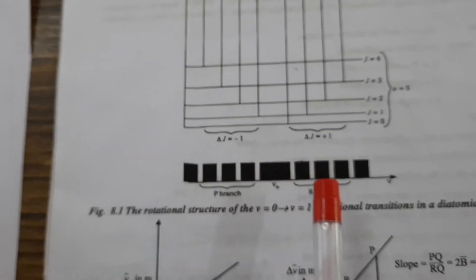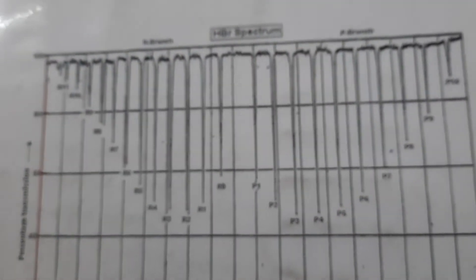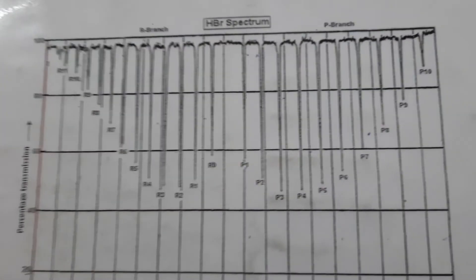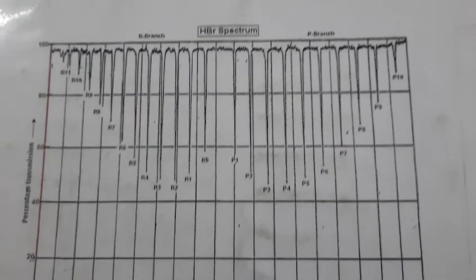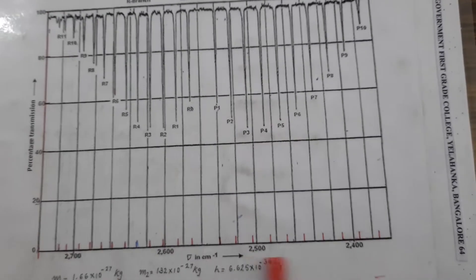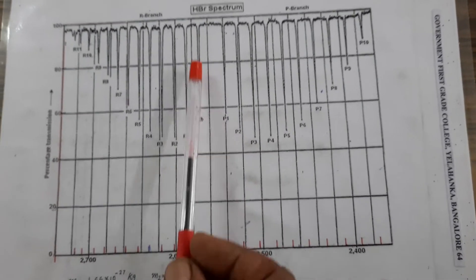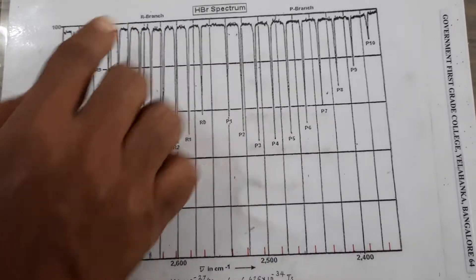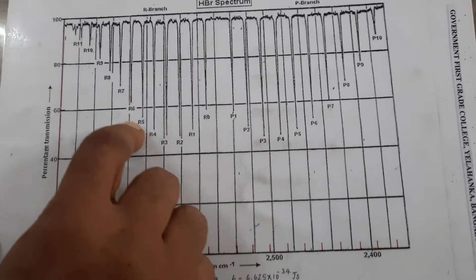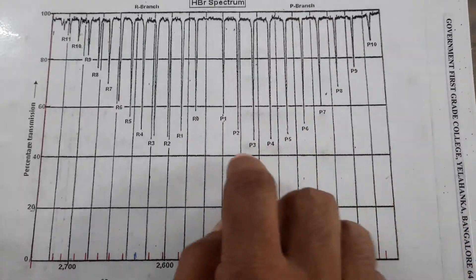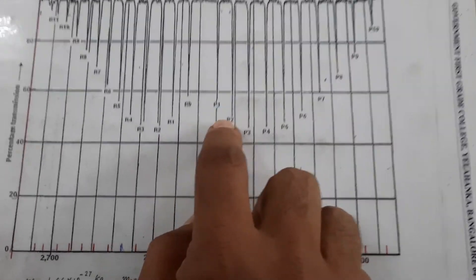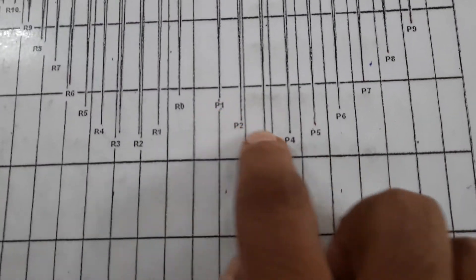These P and R branches are visualized in the spectrum as percentage transmission versus wave numbers. This branch corresponds to the R branch with various lower J-values, and this branch corresponds to the P branch. The different P-values — 1, 2, 3, 4, 5 — represent the lower J-values in the transition process.